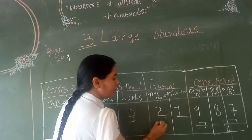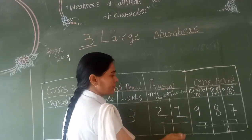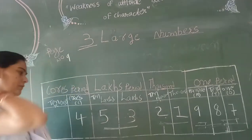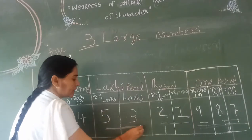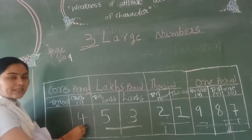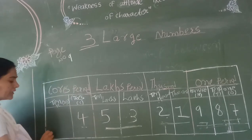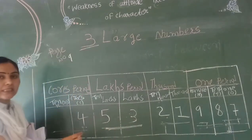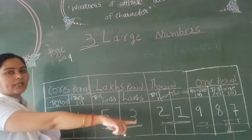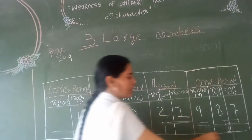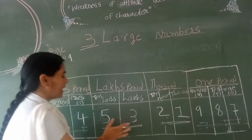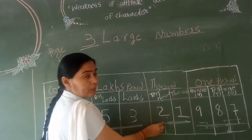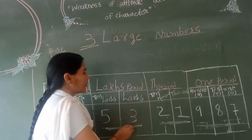Next one is thousand and ten thousand. We take this group together: 21,000. Then we take this group together: that is 53 lakh. And here only giving 4, that is 4 crore. So this full number is 4 crore, 53 lakh, 21,957.